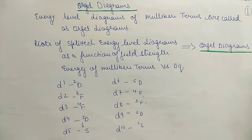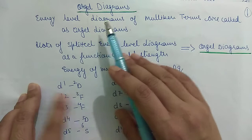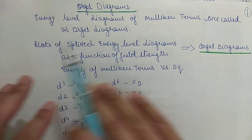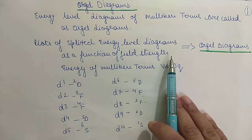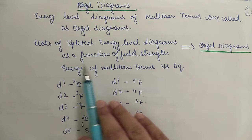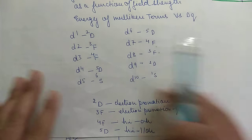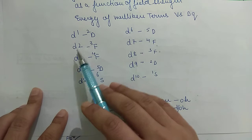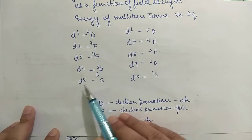Our next topic is Orgel diagrams. Orgel diagrams are energy level diagrams of Mulliken terms. They are graphical representations — plots of split energy level diagrams as a function of field strength. We have already done the terms for various configurations: for d1 it is 2D, for d2 it is 3F, d3 is 4F.